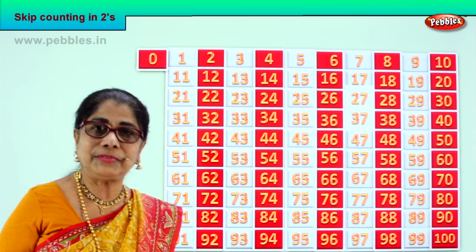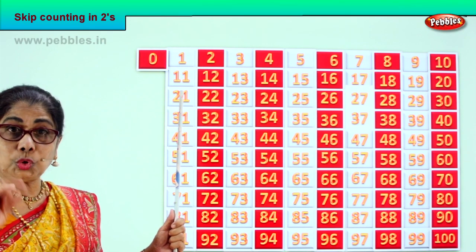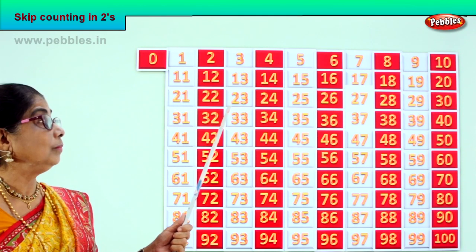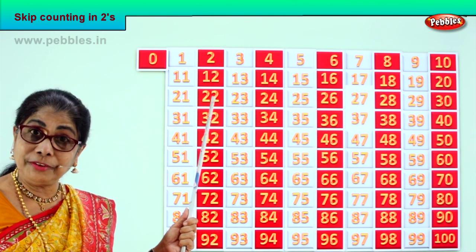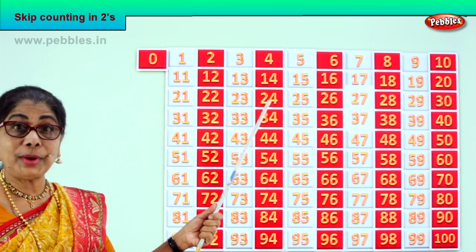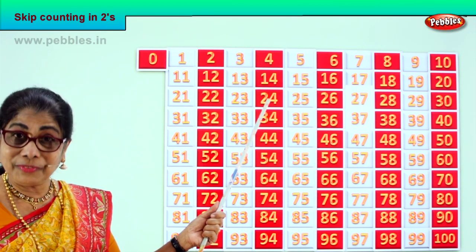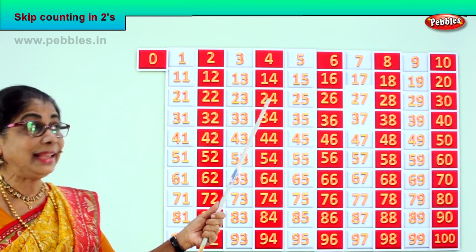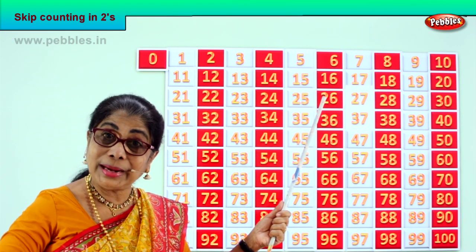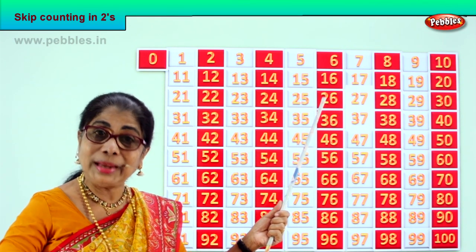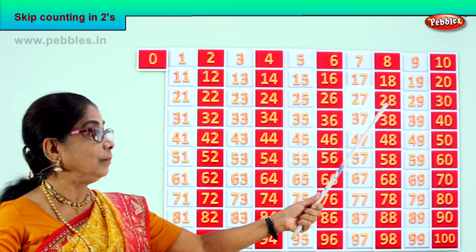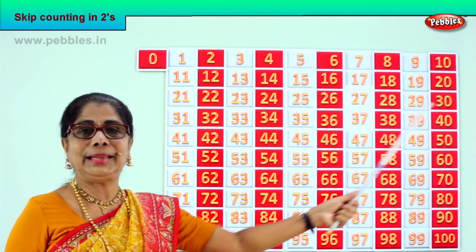Good. Next, we'll go on. After twenty: twenty-one, twenty-two. Next: twenty-three, twenty-four. After twenty-four: twenty-five, twenty-six. After twenty-six: twenty-seven, twenty-eight. After twenty-eight: twenty-nine, thirty.